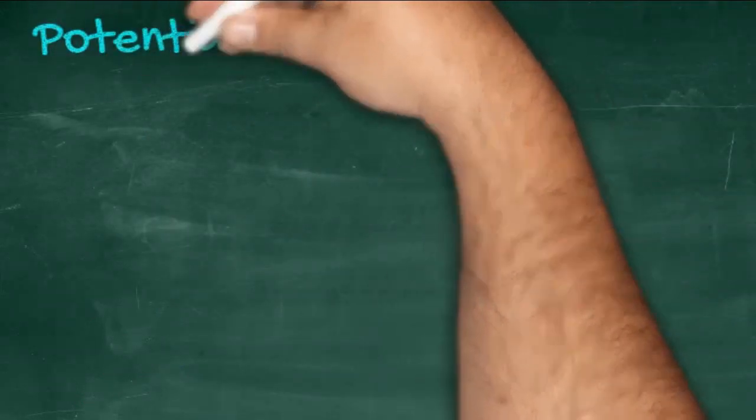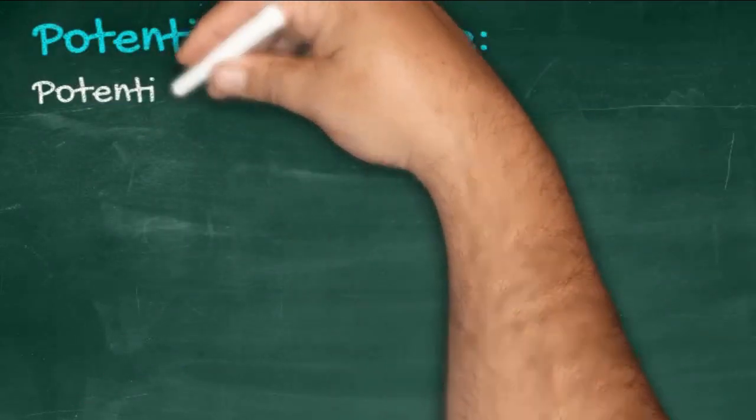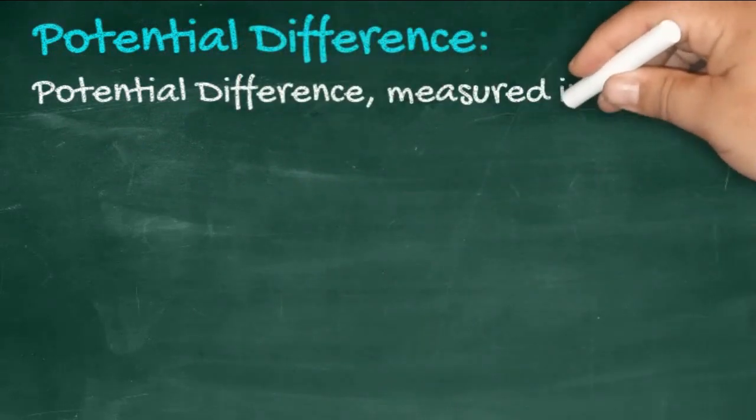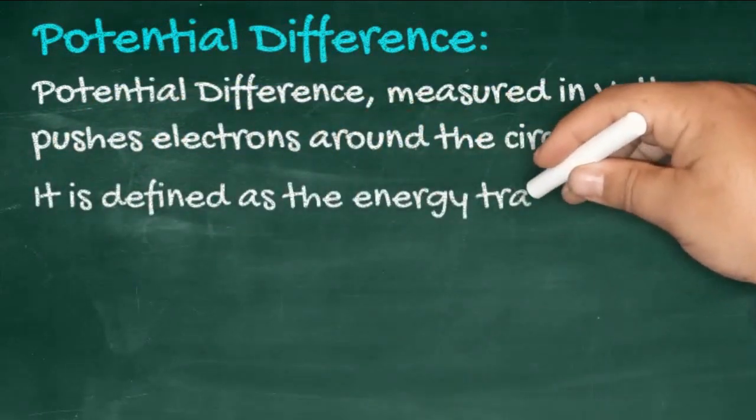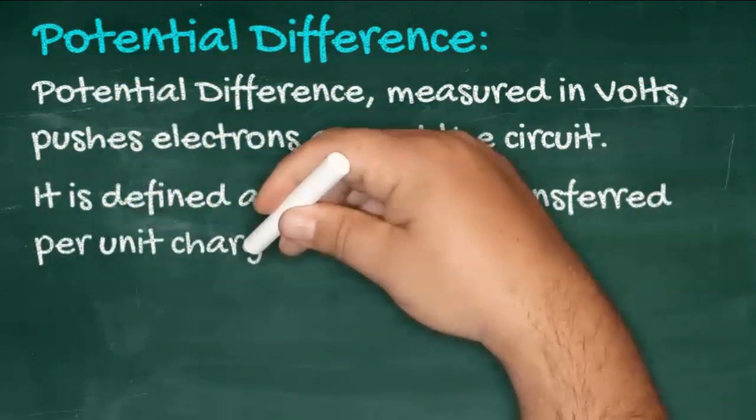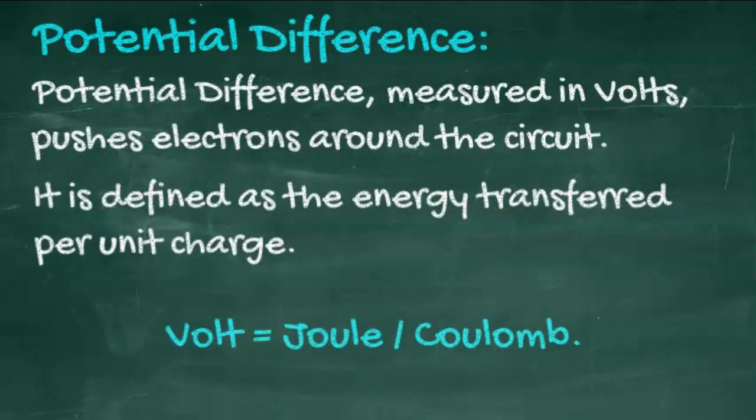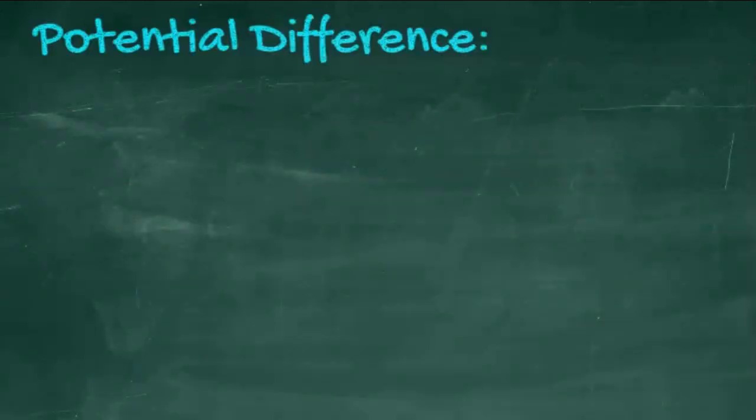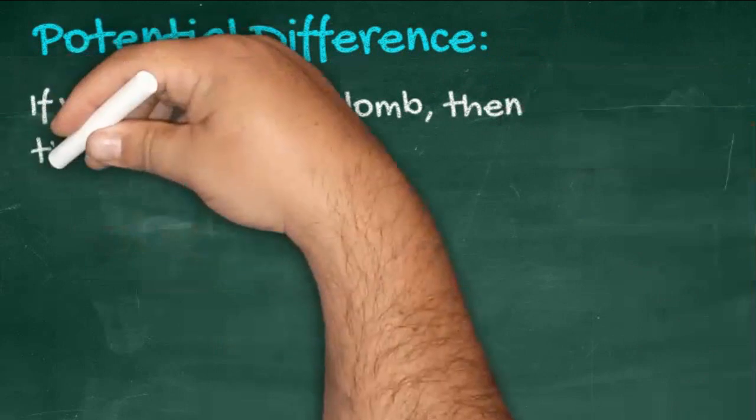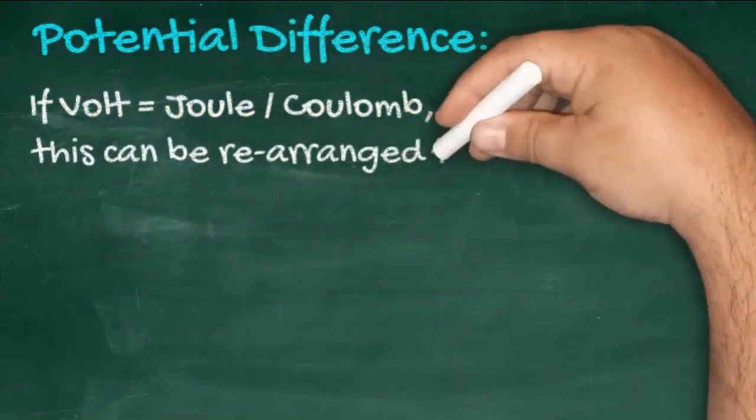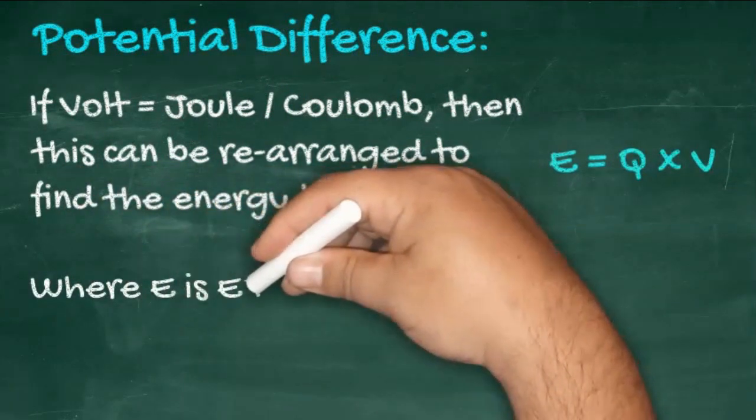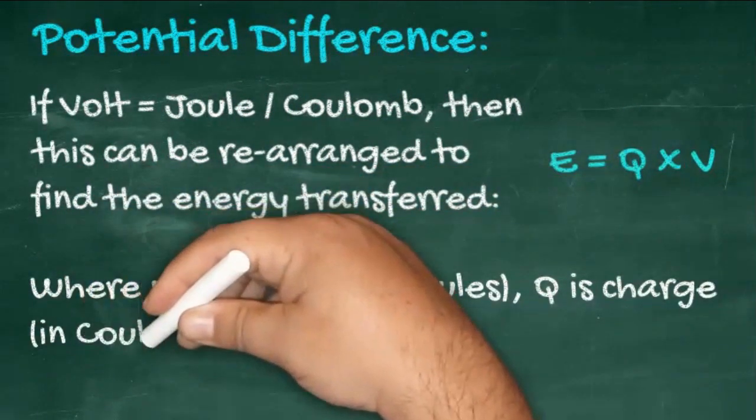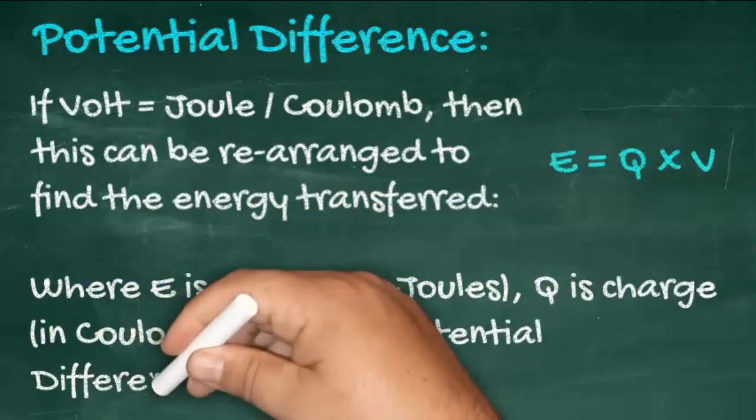Potential difference, sometimes called voltage and measured in volts, provides the push that makes electrons flow around a circuit. It's defined as the energy transferred per unit charge, hence the definition of the volt as a joule per coulomb. If by definition the volt is a joule per coulomb, we can rearrange this equation to find energy: the joule is a coulomb times a volt, where joule is energy, coulomb is charge, and volts is a measure of potential difference.